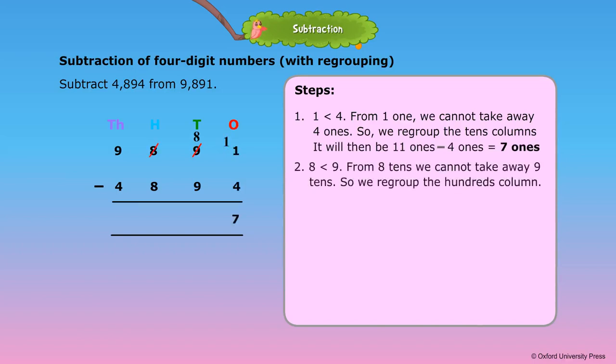Step 2: 8 is less than 9. From 8 tens, we cannot take away 9 tens, so we regroup the hundreds column. 100 is equal to 10 tens.